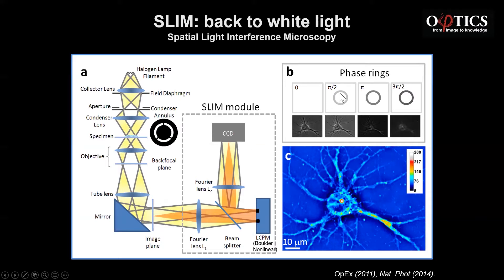Without modulation we obtain the regular phase contrast image. But the moment we add pi/2 modulation on that ring, we get another image, then pi/2 more, another image, and another image. We combine these four intensity images and now we get a beautiful quantitative phase map, which is very sensitive. Because of the white light, you have no speckles, so you see very fine details of subcellular structures — the nucleolus, dendrites that are very fine sub-micron structures. And it's also very stable in time, because phase is very sensitive to vibrations.